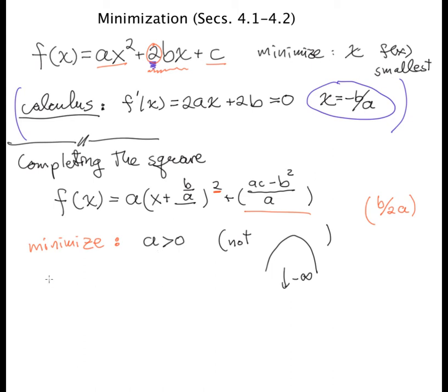So assuming that a is bigger than 0, it's clear that the minimum is that x is equal to minus b over a. Because that's the only place x appears, and the smallest you can make this is by making this term equal to 0. And the value of the function at that point is this other thing, ac minus b squared over a.